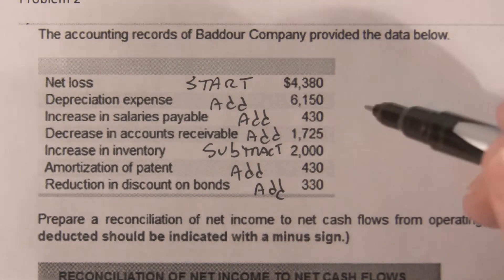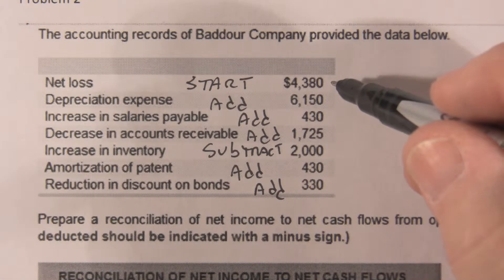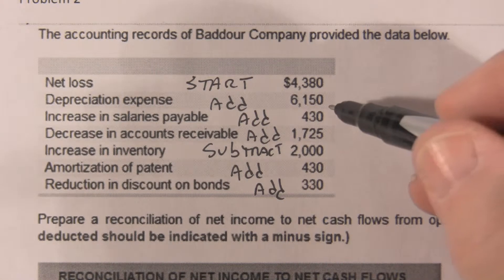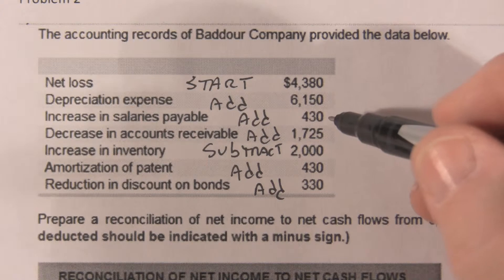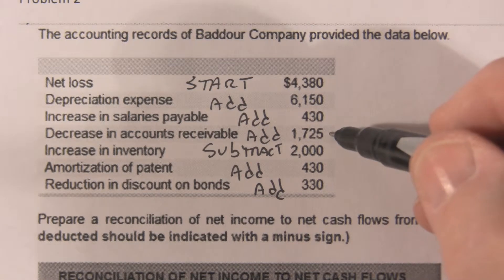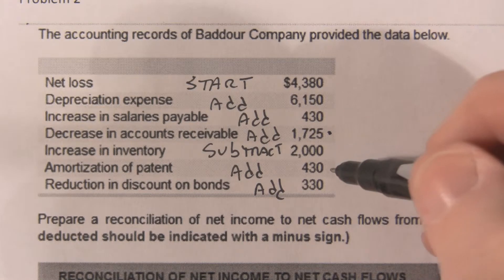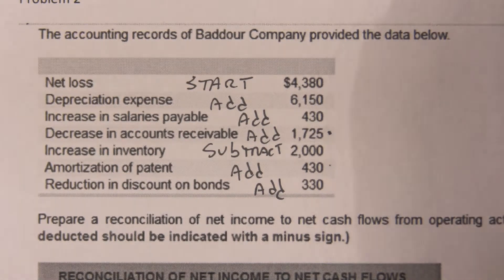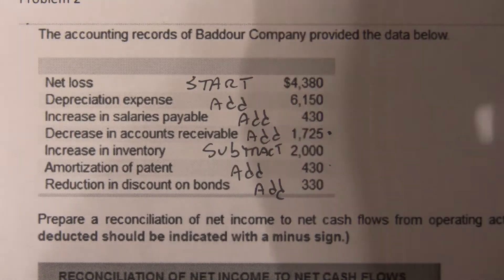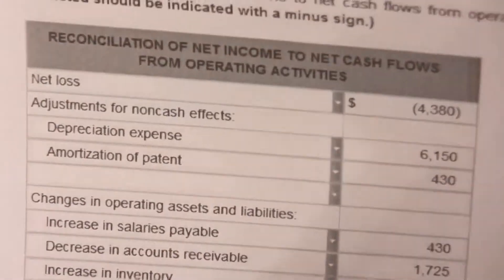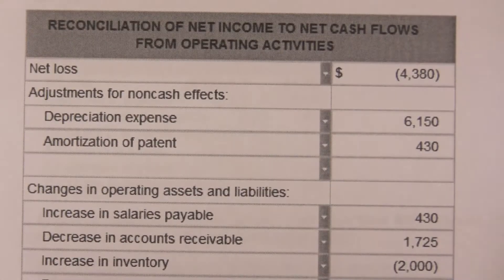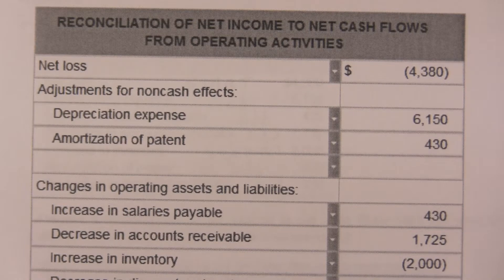So we're going to start with 43.80, add 61.50, 4.30, and 17.25. We're going to subtract 2,000, add 4.30 and 3.30, and when we're done we come up with this result.